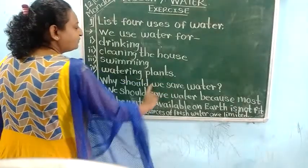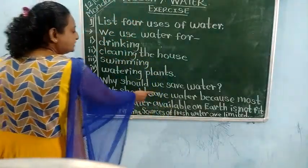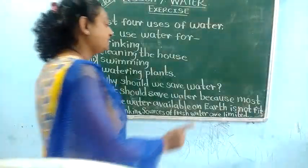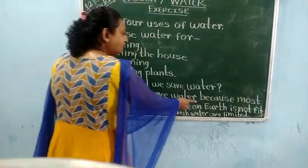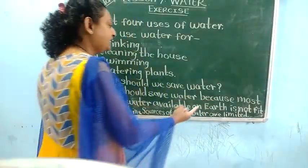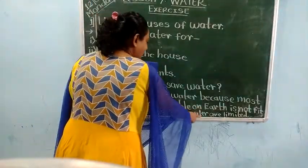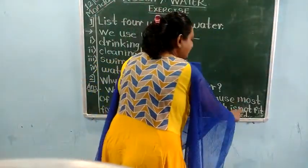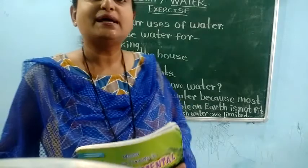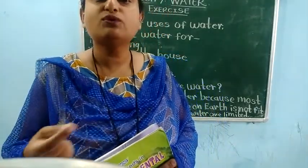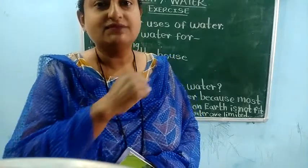Second question: why should we save water? The answer is we should save water because most of the water available on earth is not fit for drinking. Sources of fresh water are limited. That is why we have to save water. Two answers are given on the blackboard.